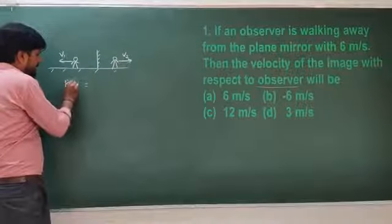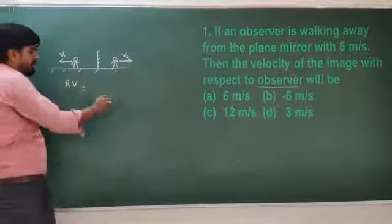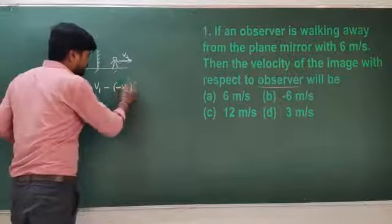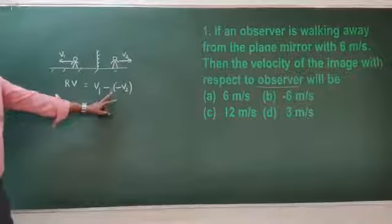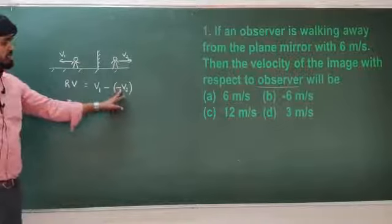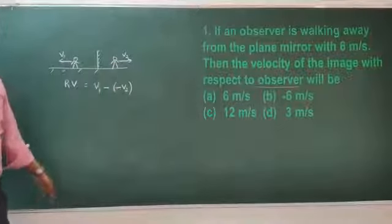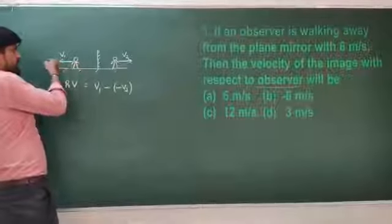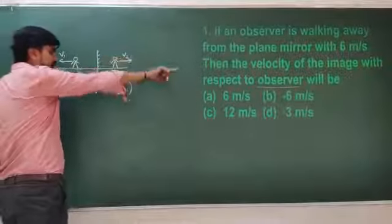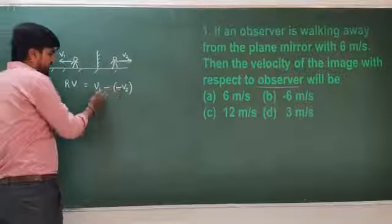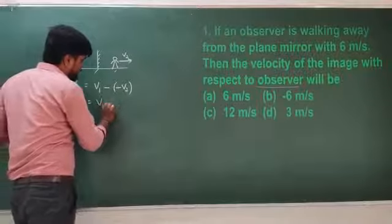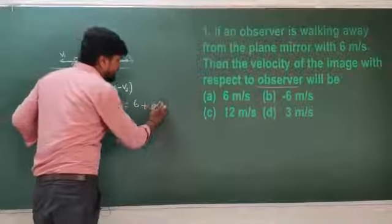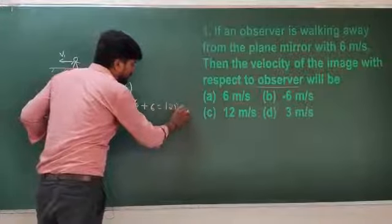The relative velocity between the observer and the image is given by V1 minus of minus V2. Velocity is a vector quantity, so it has both magnitude and direction. One velocity is moving in one direction and the other in the opposite direction, so therefore V1 minus(-V2) = V1 + V2, giving us 6 plus 6 equals 12 meters per second.